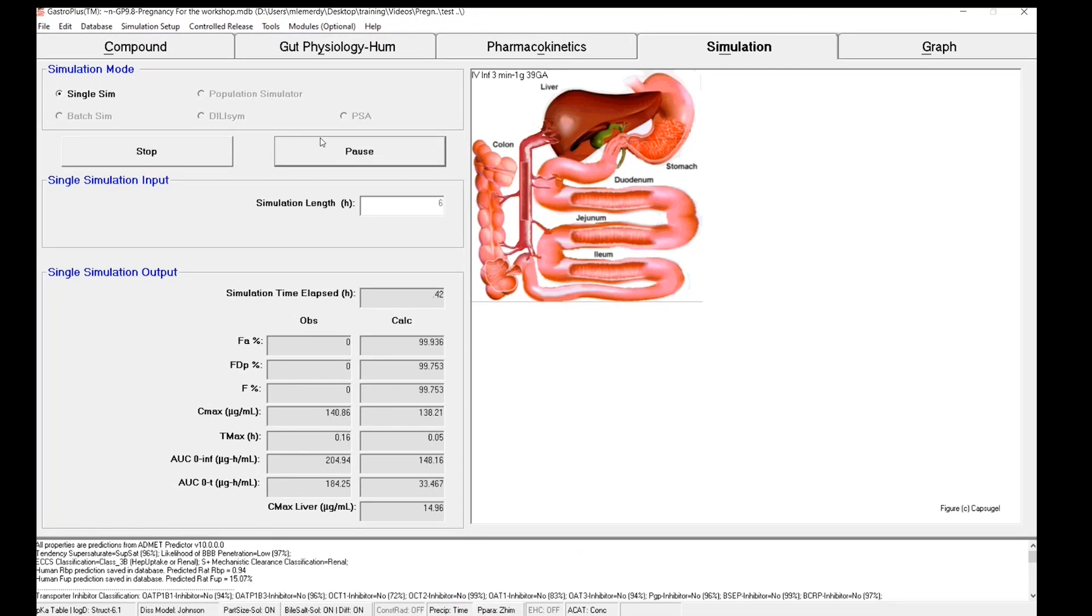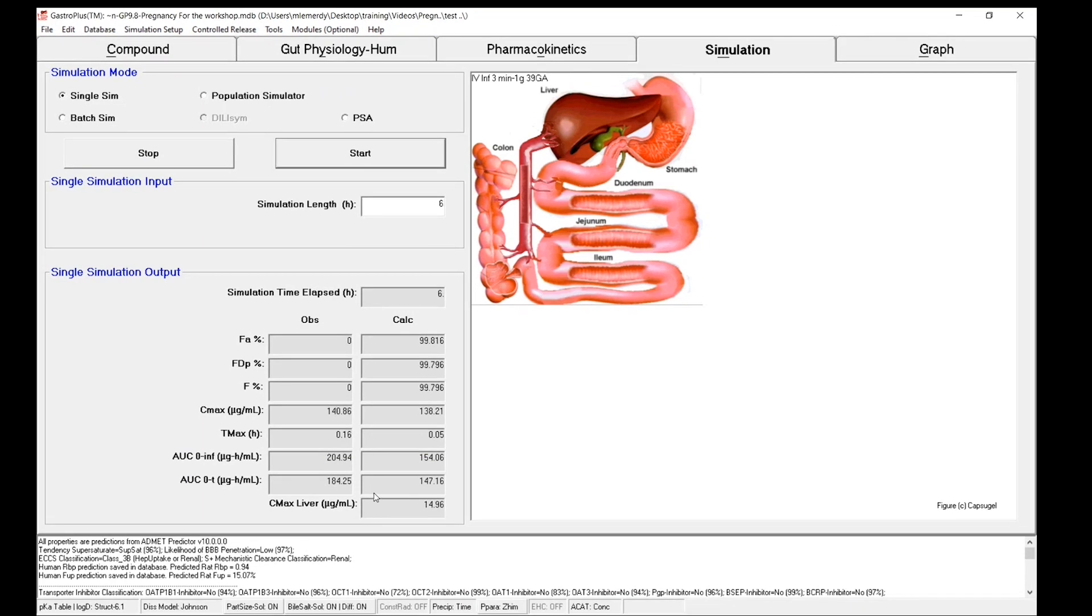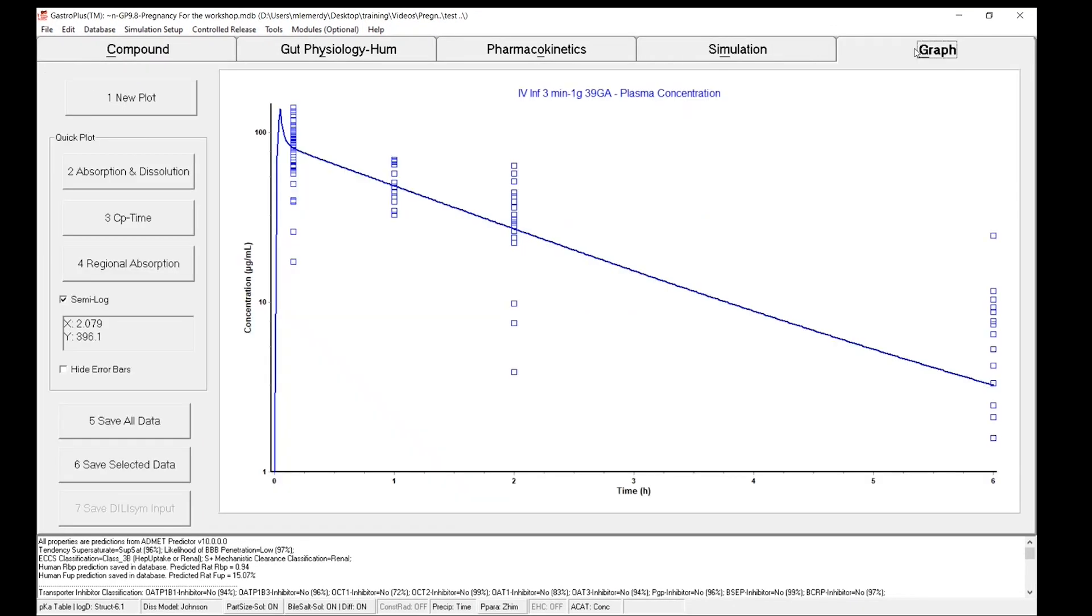I will reduce my simulation length to six hours and launch the simulations. Let's see how the model is able to predict the PK on the maternal side. First of all, you can see the CMAX seems to be relatively well predicted. And the AUC is also really good. If we look at the graph tab, you see how the model describes overall really well the observed information from the maternal side.